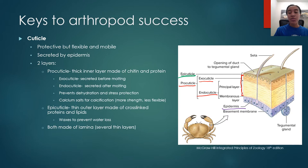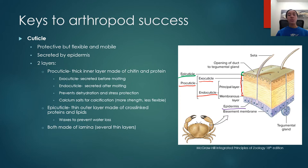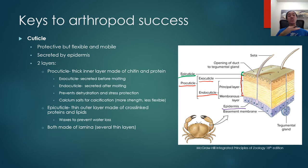The other component is the epicuticle, the outermost layer of the cuticle, primarily composed of cross-linked proteins and lipids, with waxes on the outer side to prevent water loss. Both the epicuticle and procuticle are composed of many thin layers produced by the epidermis, called laminae - visible as striated lines in this picture. Similar to mollusks building shells layer by layer starting at the mantle, the cuticle is made layer by layer. More layers means a thicker, stronger cuticle.